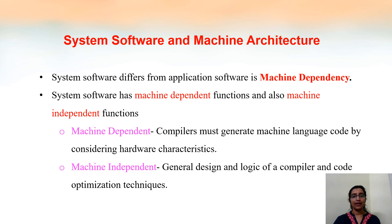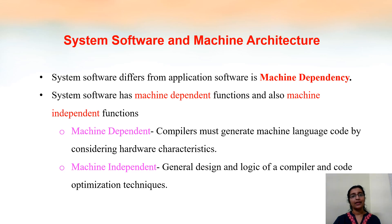We can consider one example of a compiler. A compiler has to generate machine language code from a high-level language. In order to generate the machine language code, the compiler should know the details of the hardware: the instruction formats, the addressing modes, etc. But some features — for example, the general design and logic of a compiler or code optimization techniques — do not have any relationship with the hardware. So those are machine independent features. A compiler, which is a system software, has both machine dependent and machine independent features.